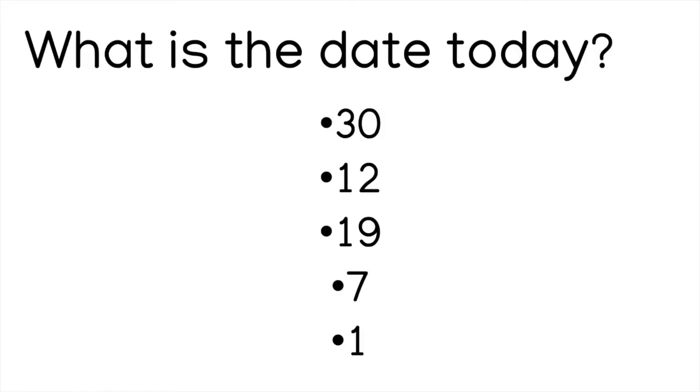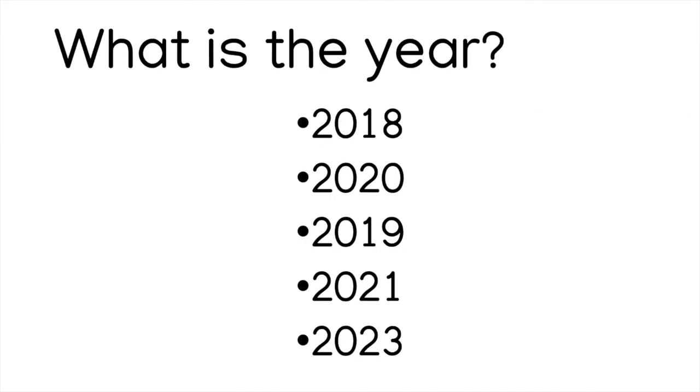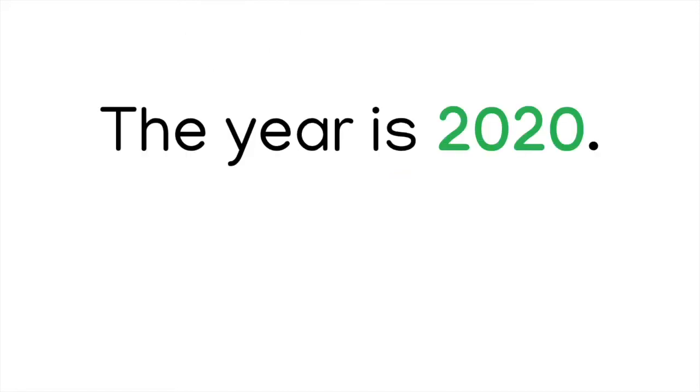What is the date today? Is it 30, 12, 19, 7, or 1? Seven. What is the year? 2018, 2020, 2019, 2021, or 2023? 2020. The year is 2020.